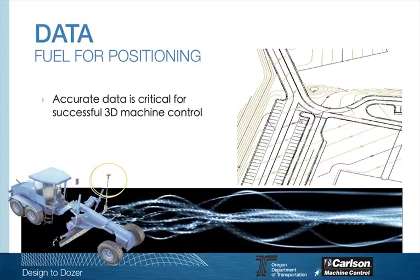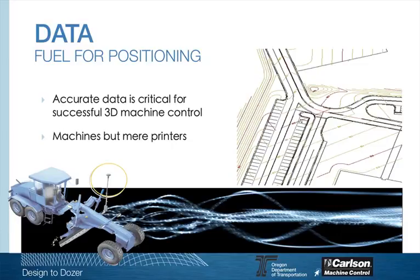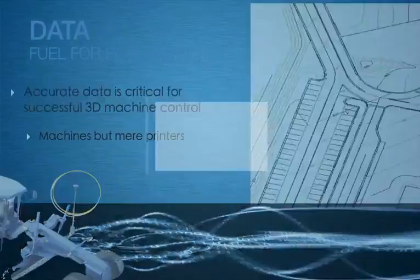Data is a critical component for successful machine control implementation — absolutely critical. It is the fuel for positioning. The machines will just sit there and do nothing, just like a printer, if the data is not available or not accurate.